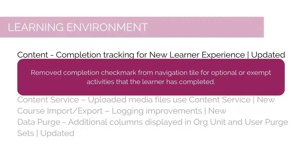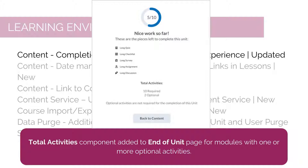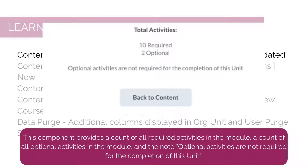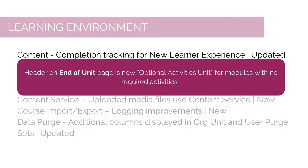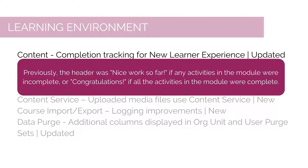The completion checkmark is removed from the navigation tile for optional or exempt activities that the learner has completed. A Total Activities component has been added to the end of unit page for modules with one or more optional activities, providing a count of required activities, a count of optional activities, and the note that optional activities are not required for completion of the unit. The count of optional activities includes both optional and exempt activities. The header on the end of unit page is now 'Optional Activities Unit' for modules with no required activities, previously it was 'Nice Work So Far' or 'Congratulations'.